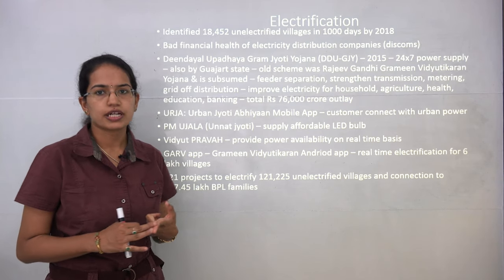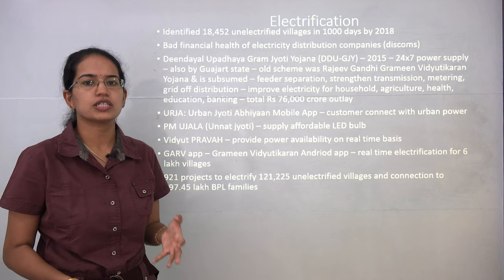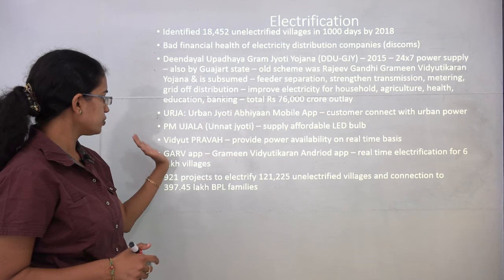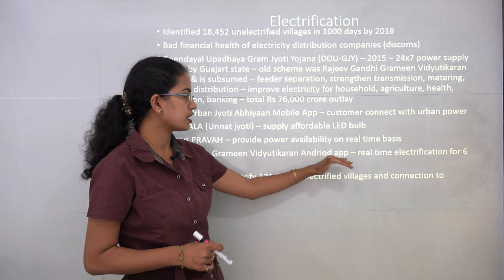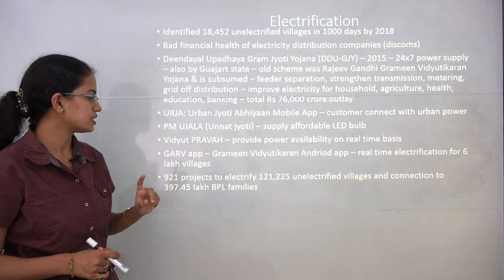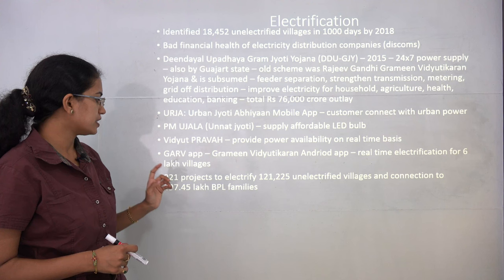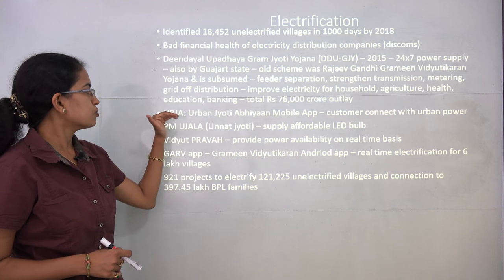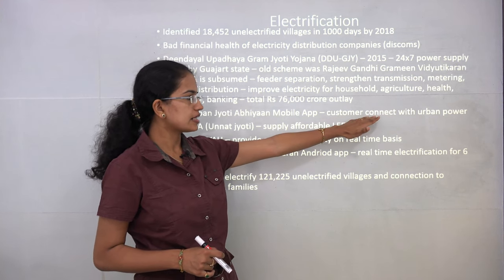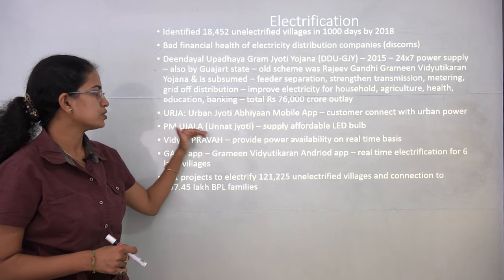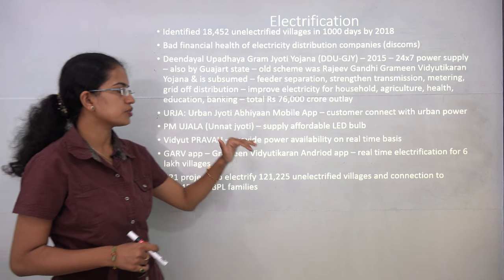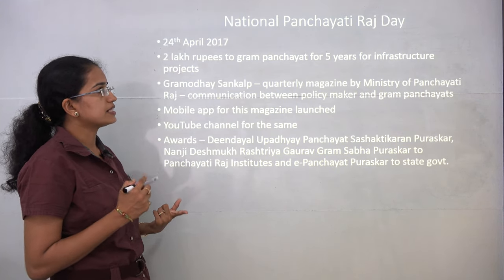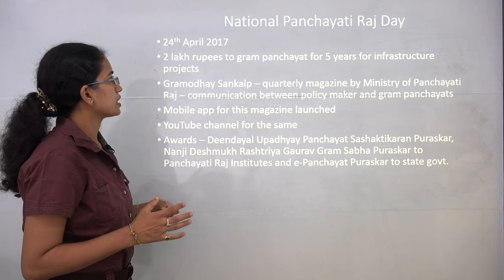Make in India and Stand Up India are two other important schemes. For electrification, the target is 100 percent by 2018 covering 18,000 uncovered villages. GARV App — the Grameen Vidyutikaran Android App — provides real-time electrification data for 6 lakh villages. VIDYUTPARV provides real-time power availability. URJA — Urban Jyoti Abhiyan — connects customers with urban power schemes. PM UJALA Yojana — Unnat Jyoti by Affordable LEDs — provides affordable LED bulbs to rural areas.